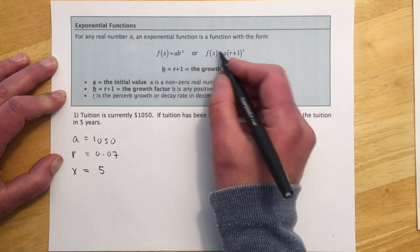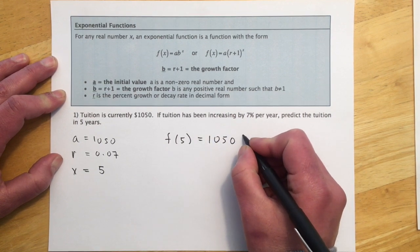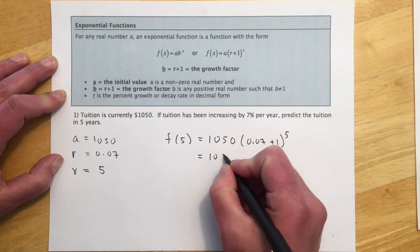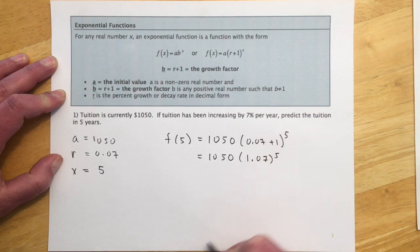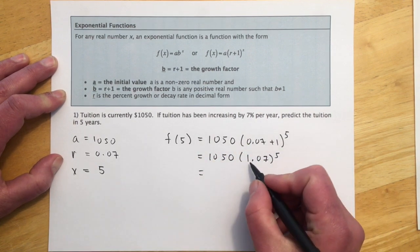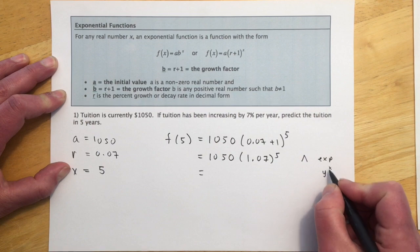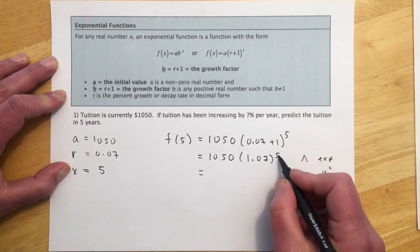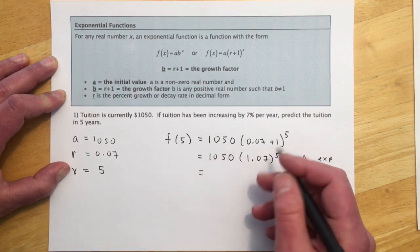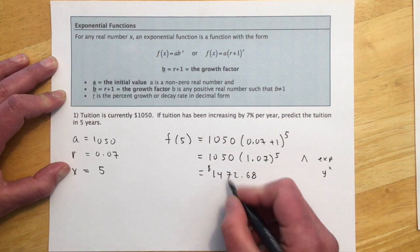So setting up my equation, we're finding f, we're finding the output, so we're finding f(5). And that's going to be $10,050, and then 0.07 plus one raised to the five. So adding these together, $10,050, I get 1.07 raised to the fifth. And then if you chunk that in your calculator, go 1.07, and then your raise to button, which is either a caret, maybe exponentiate, or it could be y to the x. So 1.07, that to the fifth. And then hit enter, and then times $10,050, enter. And then you should get $14,072.68. So that would be the tuition five years later.